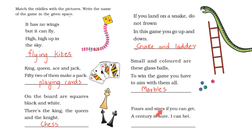Fours and sixes if you can get a century is sure I can bet. I think in which game can I score fours and sixes and also a century. It is the game of cricket. So I write cricket.